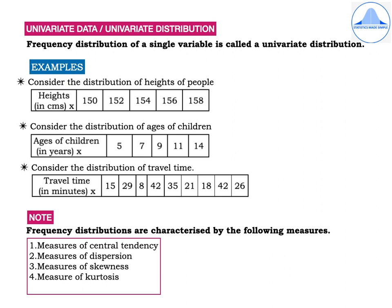Now frequency distributions are characterized by the following measures: first measures of central tendency, second measures of dispersion, third measures of skewness and fourth measures of kurtosis.